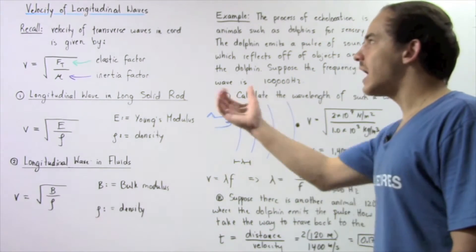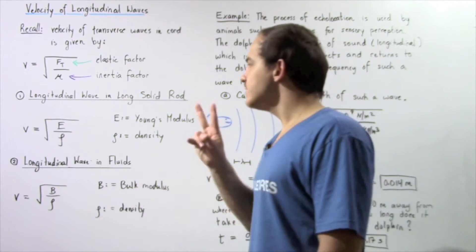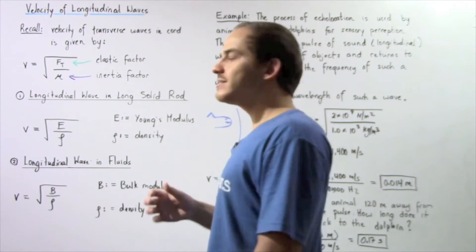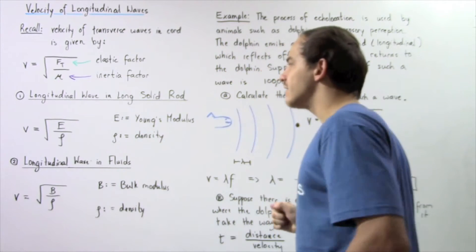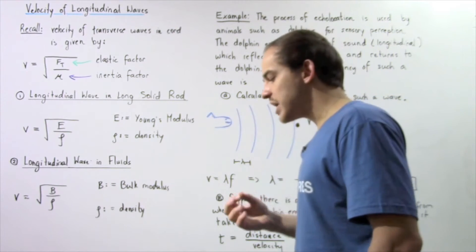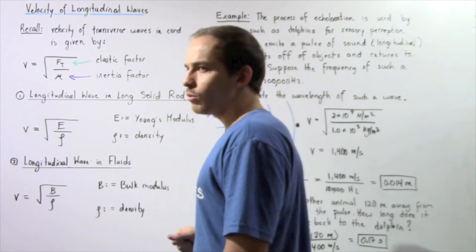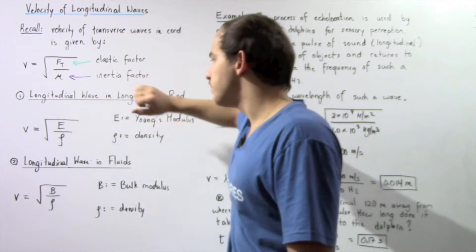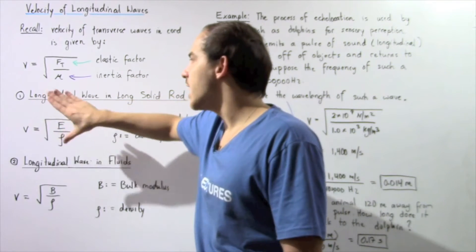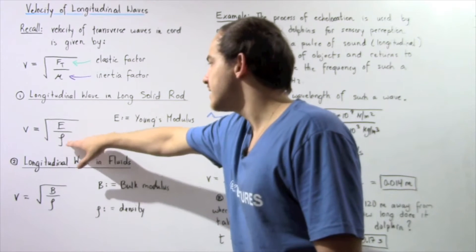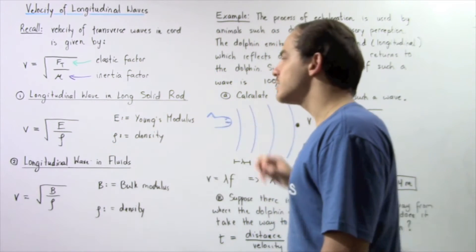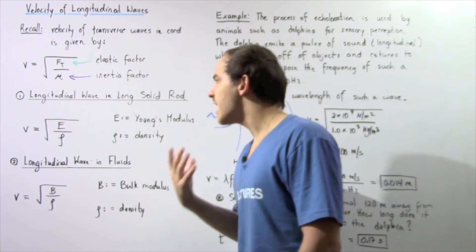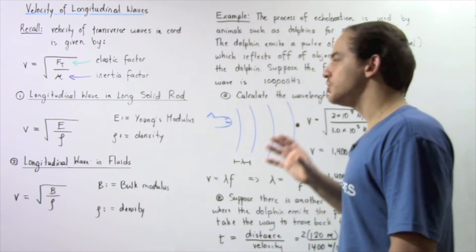Now let's discuss the velocity of longitudinal waves in two cases. Case number one: longitudinal waves as they propagate inside a long solid rod. The velocity of such a mechanical wave is given by the square root of Young's modulus E divided by the density rho of that material. Both of these factors depend on the type of medium — the type of long solid rod — that we're using.